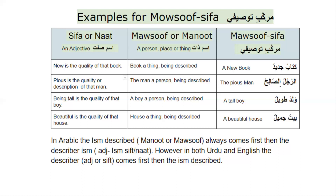Ar-rajulu saalihu — the pious man. With al-, this da is from al-. So ar-rajulu saalihu — both are starting with al-, so both are marifa. The first one is the man — a person being described — and pious is the quality or the description of that man.